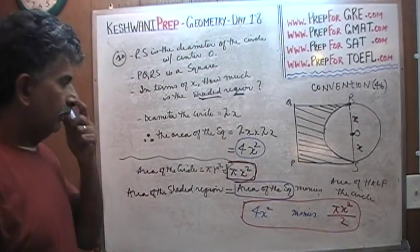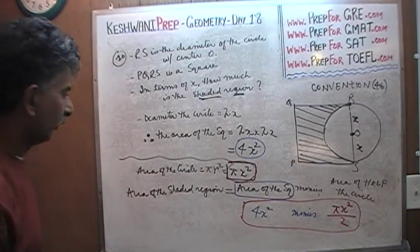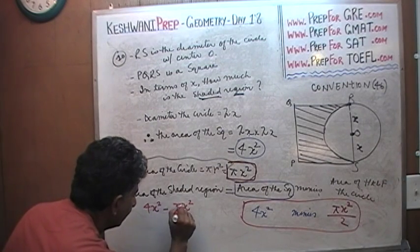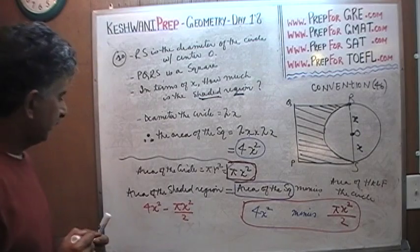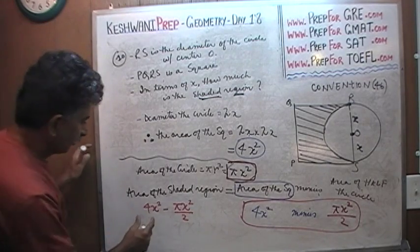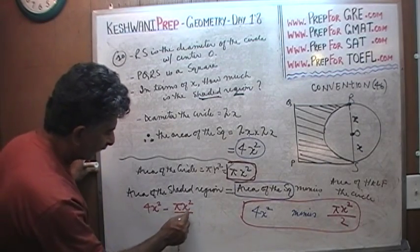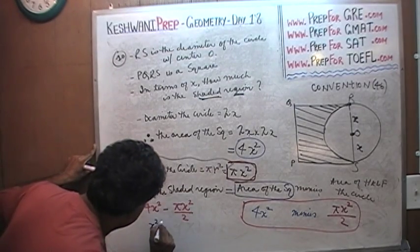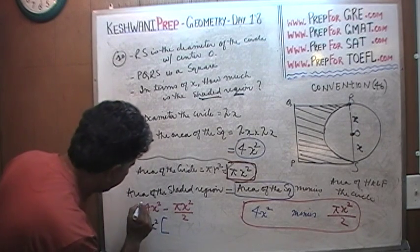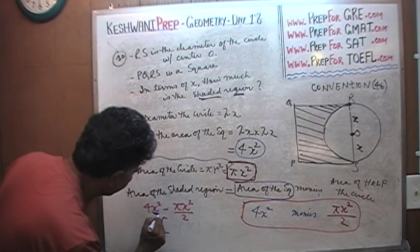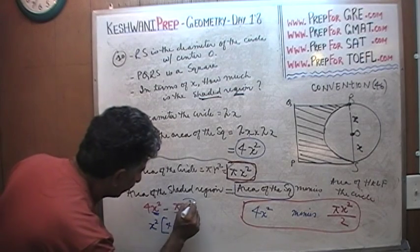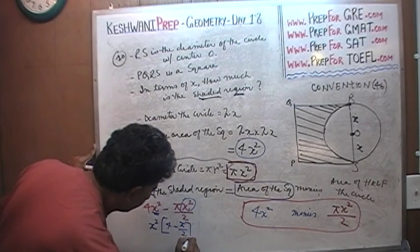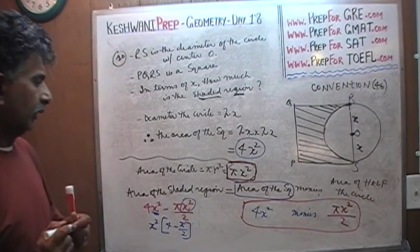Now we simplify until it looks like the answer shown before. We have 4X squared minus pi X squared over 2. Do you find anything common between these two quantities? X squared is common — let's factor it out. Taking out X squared, from the first term we are left with 4, and from the second term we are left with pi over 2. So the answer is X squared times open parenthesis 4 minus pi over 2 close parenthesis. Voilà — there is your answer.